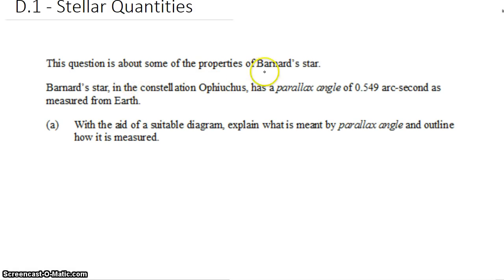This question is about some properties of Barnard's star. Barnard's star is in this constellation, I'm not going to attempt to pronounce it. You can have a go for yourself if you like. But it has a parallax angle of 0.549 arc seconds, as measured from Earth.